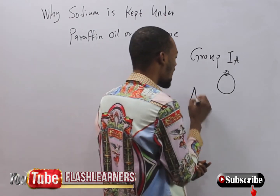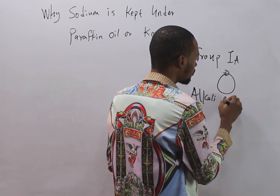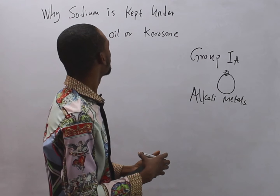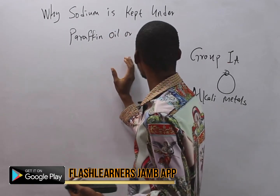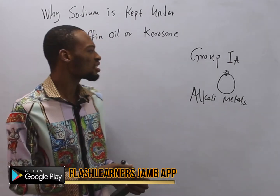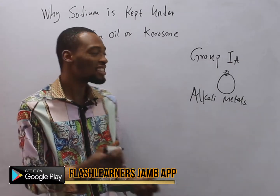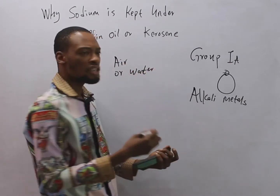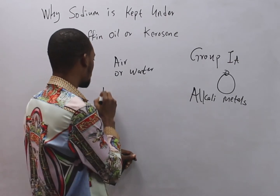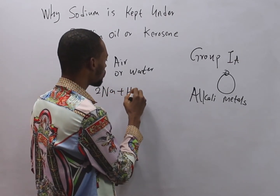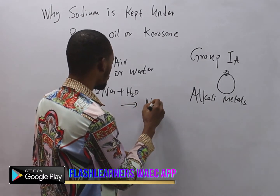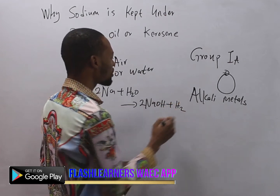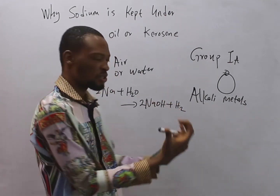Group 1A elements are also called alkaline metals, so they are metals. Sodium is kept under paraffin oil or kerosene because if kept otherwise, it will react readily with air or water. If sodium reacts with water — Na plus H2O — it forms caustic soda, or you can say sodium hydroxide.